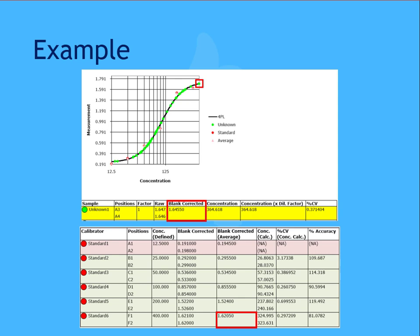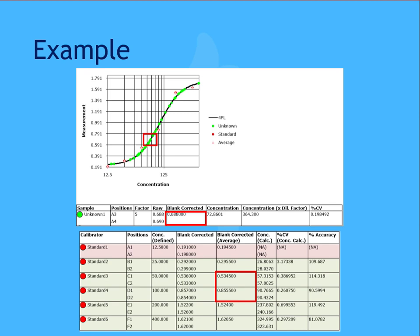So we want to reanalyze this data because now the blank-corrected value does fall within the range of the standards, and we're looking to confirm our previously received concentration result of approximately 365. So reviewing the updated values for unknown 1, you can see the new blank-corrected value, or y-axis value, falls well within the reportable range of the curve in standards. Looking at the curve, you can see the range in which unknown 1 falls is essentially in the middle of the standards, with that blank-corrected value being between standards 3 and 4.